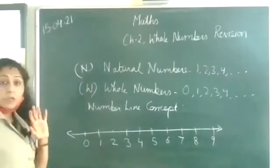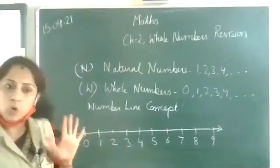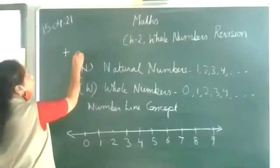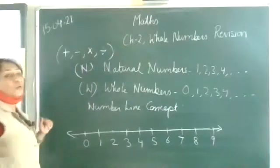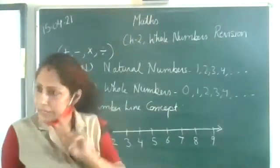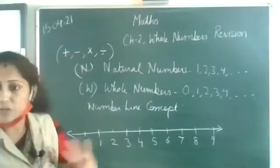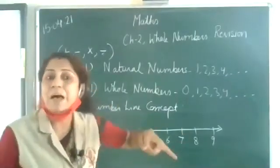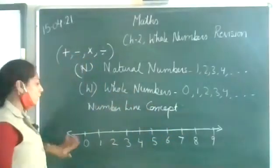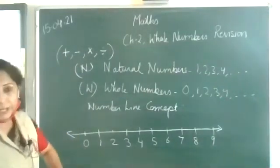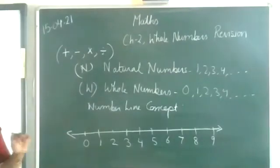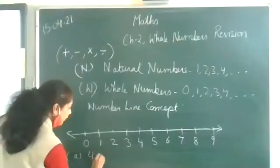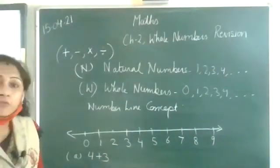Very good. Now, what is the purpose of representing whole numbers on a number line? As you all know, everybody has done four operations on natural numbers — plus, minus, multiplication, division. Everybody is aware of these. Now, the similar pattern — these operators are going to perform with whole numbers also. I'm going to show you how to do addition on the number line. I'm taking an example: four plus three.